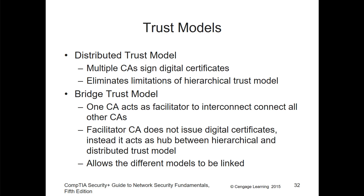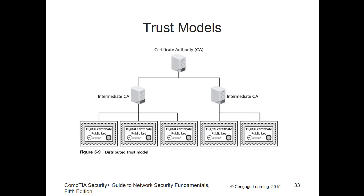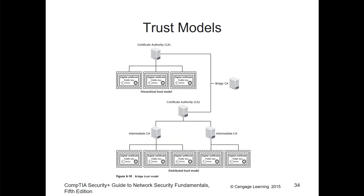We have a bridge trust model, where one certificate acts as a facilitator to interconnect other certificate authorities. The internet functions similarly — main certificate authorities with intermediate certificate authorities working underneath them. In a bridge model, multiple certificate authorities share information across a bridge between them.